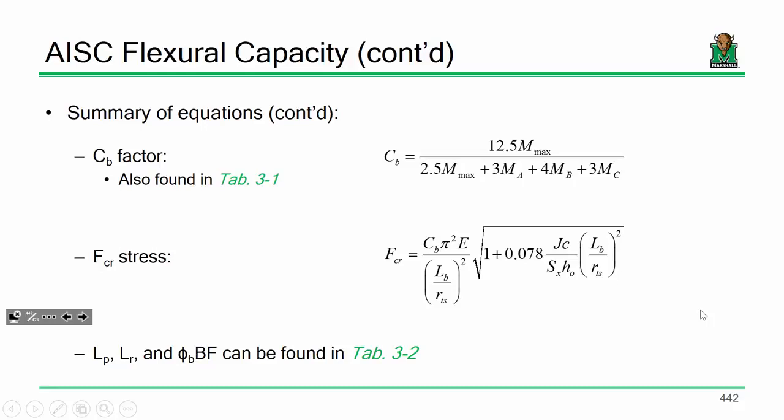C sub B is computed using the equation shown. You can also use table 3-1, and it can be a very convenient guide. However, just be very, very careful. If you have a beam, for instance, that has a very substantial distributed load and a very substantial point load, then table 3-1 really doesn't work out very well.